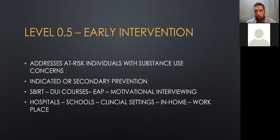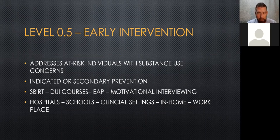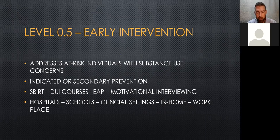Level 0.5 is early intervention, for those who are at risk. An at-risk population could be teenagers or lower-income communities — generalized populations identified as being at risk for substance use. That would be secondary prevention. Indicated prevention is someone who may have used substances already but doesn't meet the clinical diagnosis of a substance use disorder — perhaps someone who drinks occasionally but has gotten into legal trouble and needs education to prevent it from becoming a greater problem.